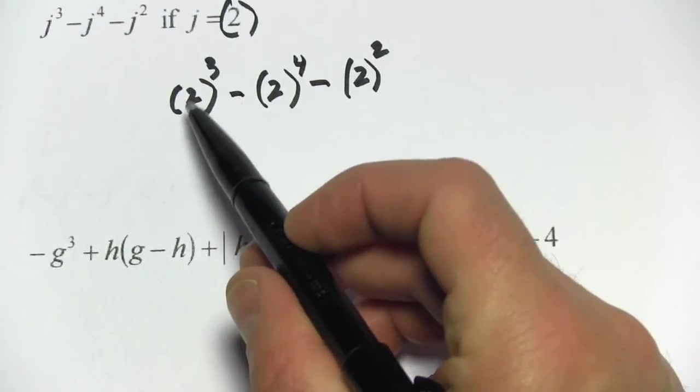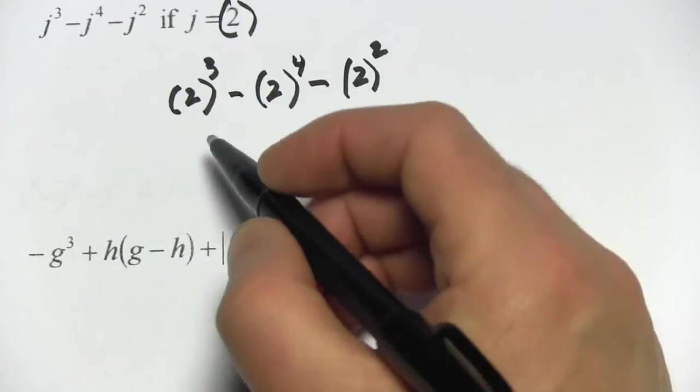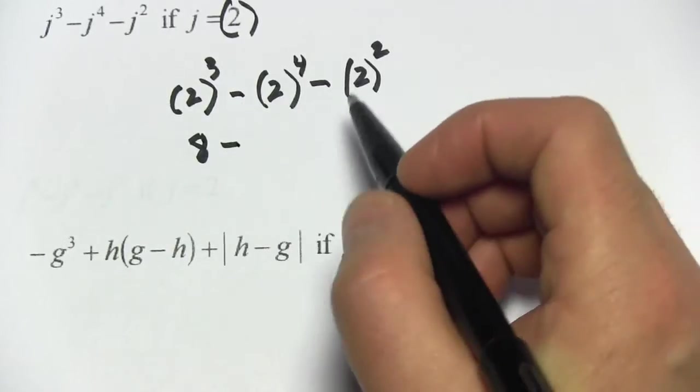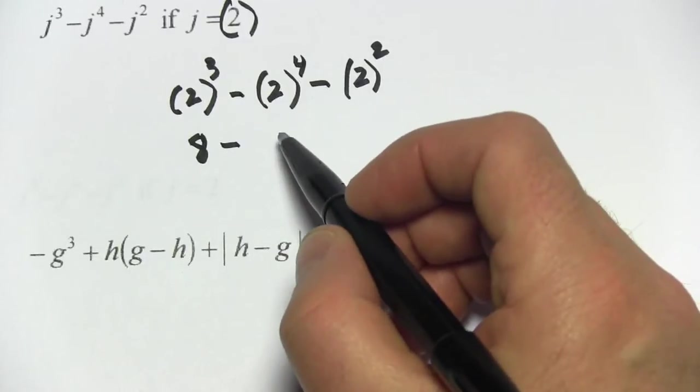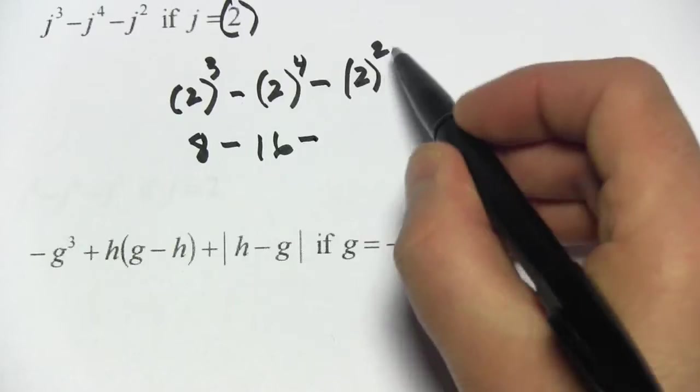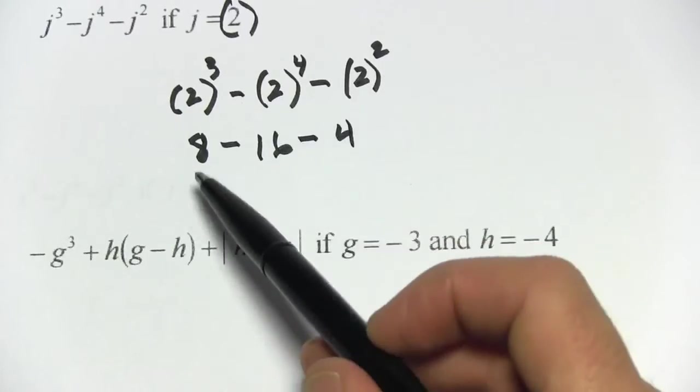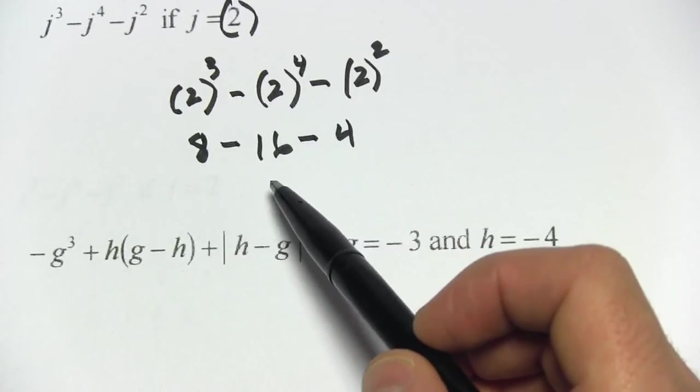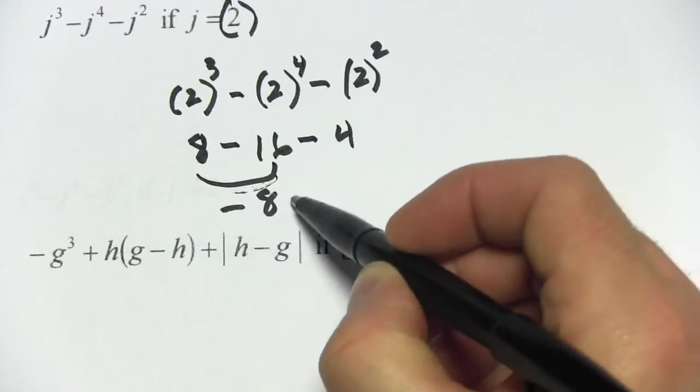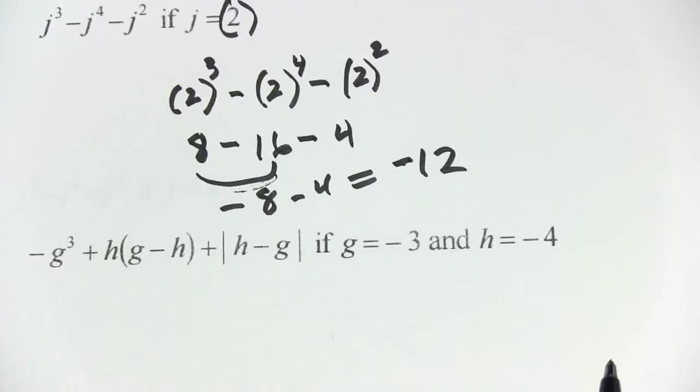Now we can do our work with the exponents. 2 to the third power, 2 times 2 times 2, that's 8, and we have a minus sign. 2 to the fourth power is 2 times 2 times 2 times 2, that's 16. And then we have a minus sign, and then 2 to the second power is 4. So we have 8 minus 16, that's negative 8, minus 4, that should be negative 12.